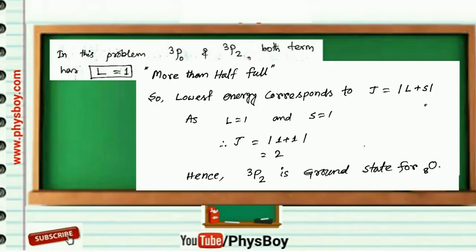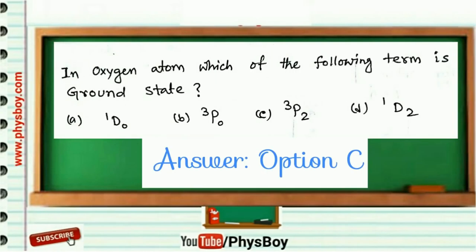So J equals 1 plus 1 equals 2. So 3P2 will be the ground state for oxygen atom.